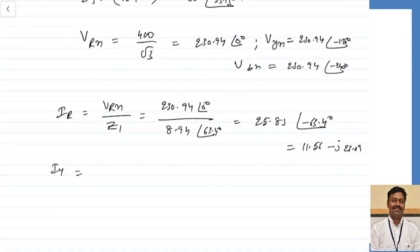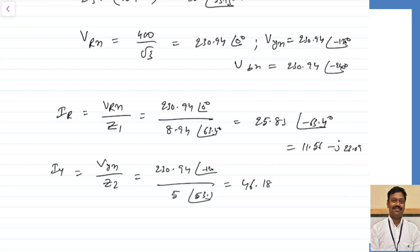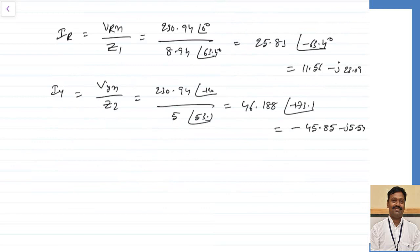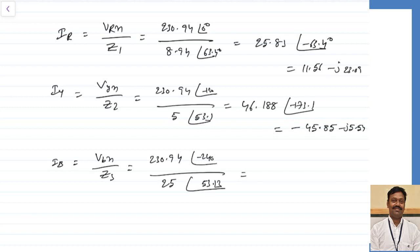Similarly, IY = VYN/Z2 = 230.94∠−120° / 5∠53.1° = 46.188∠−173.1° = −45.85 − j5.54 A. And IB = VBN/Z3 = 230.94∠−240° / 25∠53.13° = 9.23∠293.13° = 3.62 + j8.48 A.